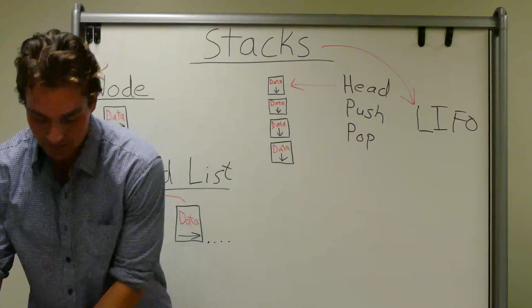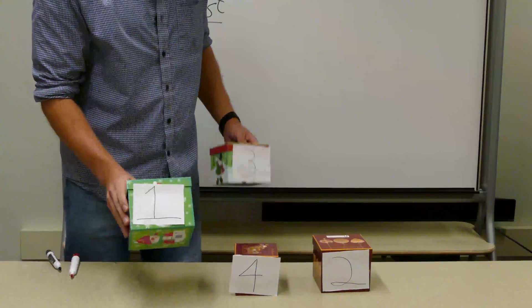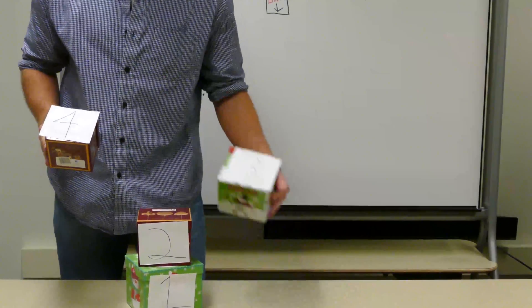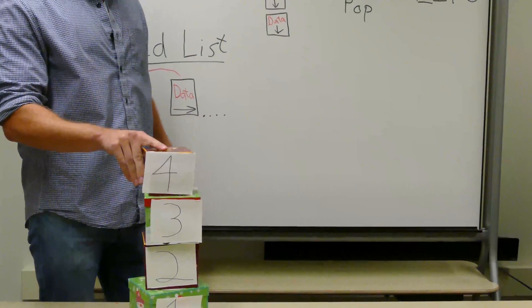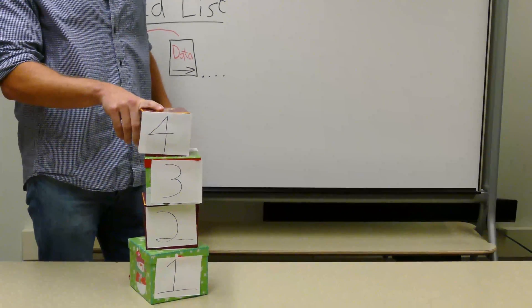Now, this can be seen when we put them in order. If we push them one, push two, push three, push four, the fourth box is the last item that we interacted with. Therefore, it is the first one out.